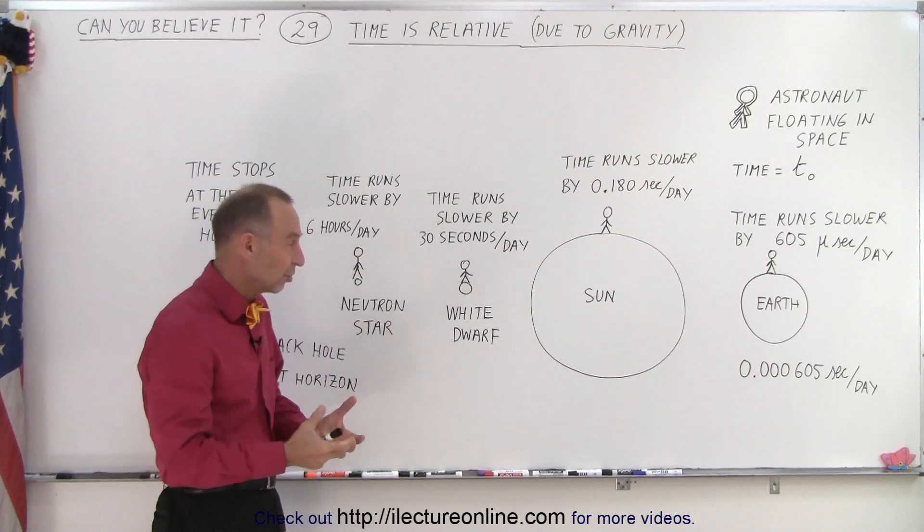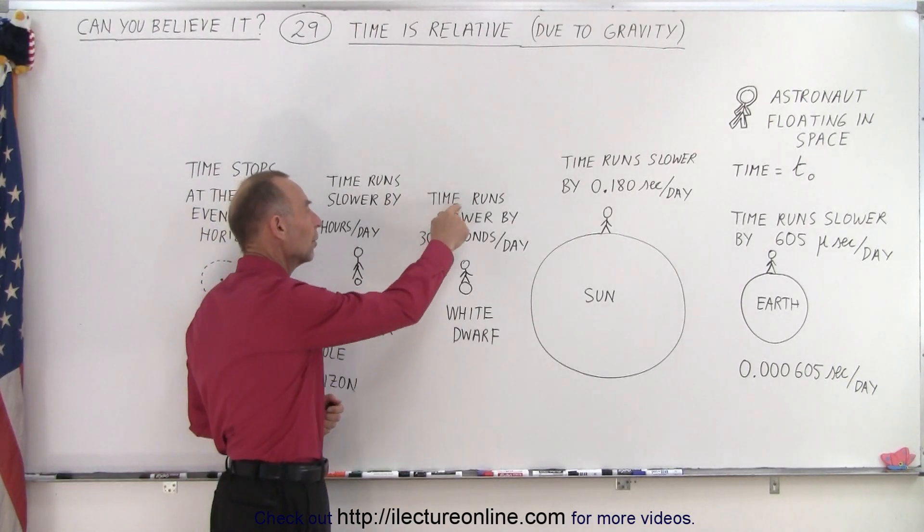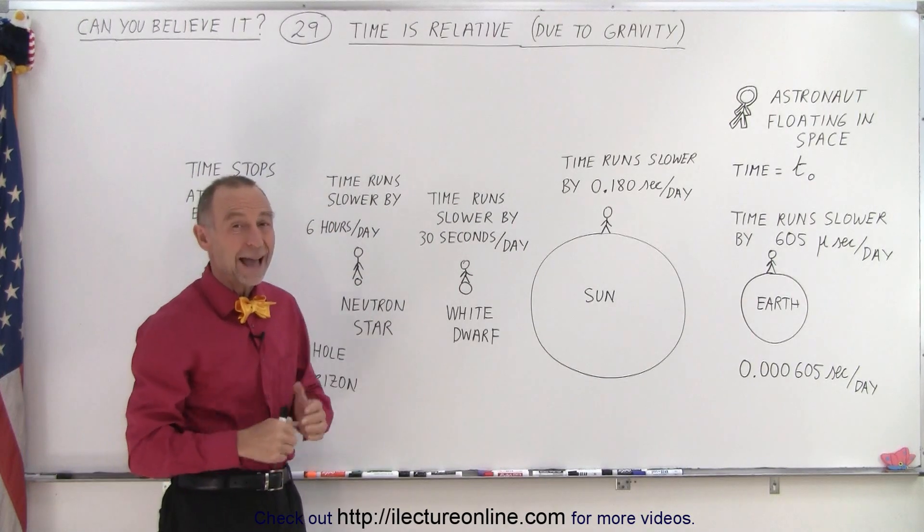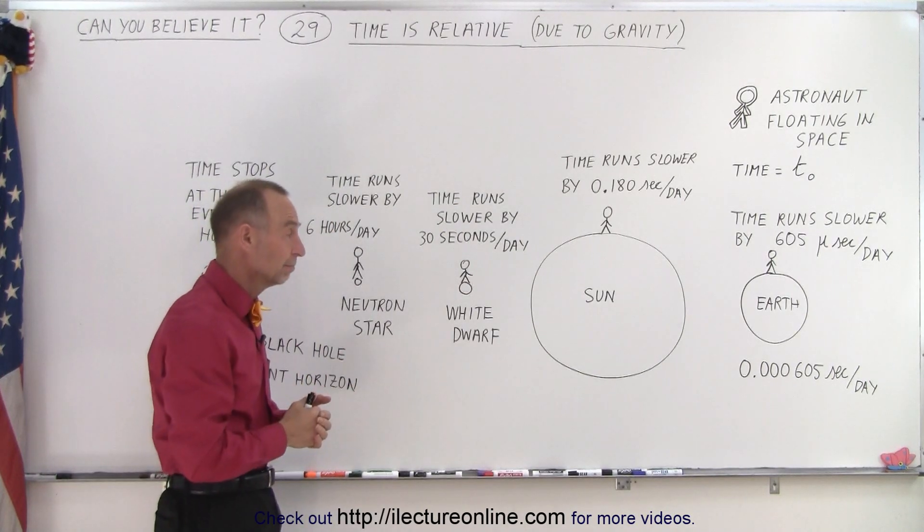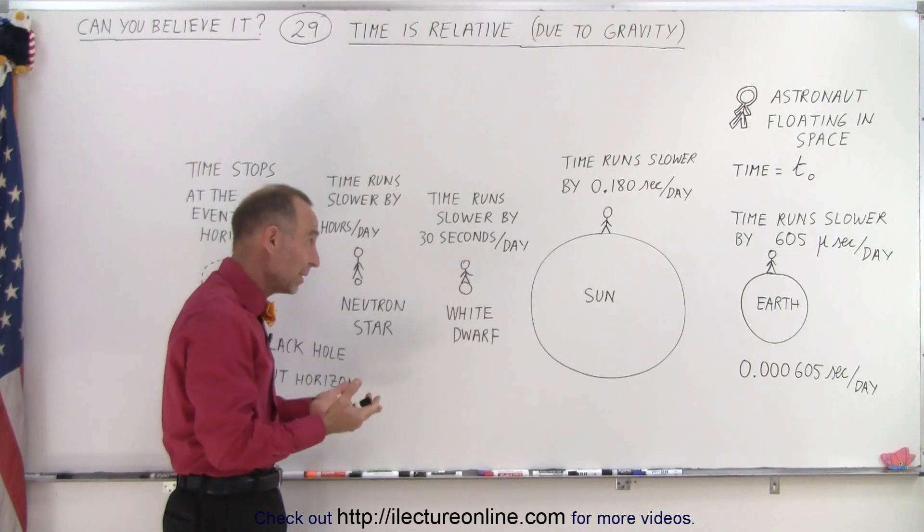But if you stand on the surface of a White Dwarf, the gravitational attraction is so powerful, so strong there, that time will run slower by as much as 30 seconds per day, a half a minute per day. Again, you might say, well, that's not that much of a difference.